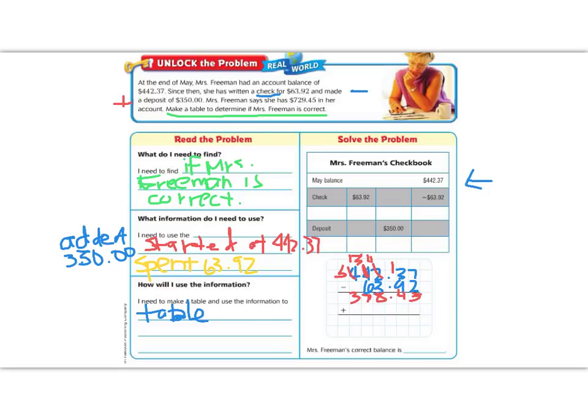Now we need to add in her deposit of $350 even. So 5 plus 0 is 5. 4 plus 0 is 4. 8 plus 0 is 8. 7 plus 5 is 12, so 2 carry the 1. 3 plus 3 is 6, plus 1 is 7. And we're going to add our decimal. So we get the number 728.45.